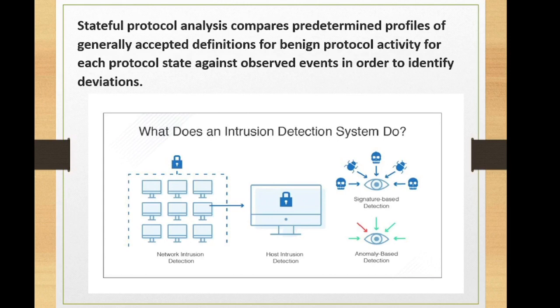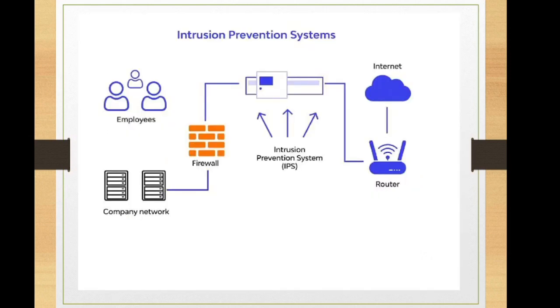If you remember just one methodology, that is more than enough. Signature-based detection is the easiest to recall - an antivirus functions the same way. IDS is installed on the network whereas antivirus is installed on the endpoint. A diagram here explains the whole organization of an IDS, covering signature-based detection, anomaly-based detection, host intrusion detection, and network intrusion detection.